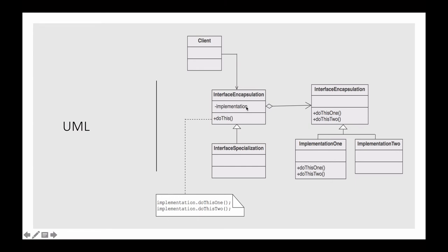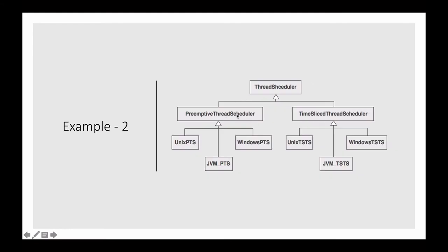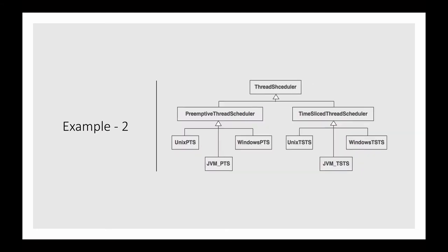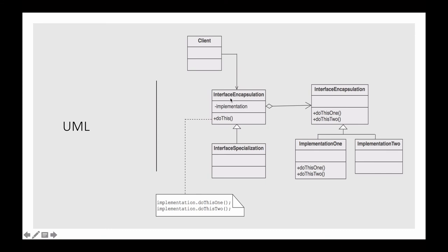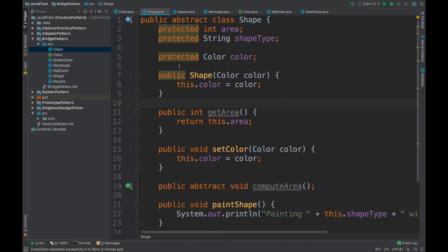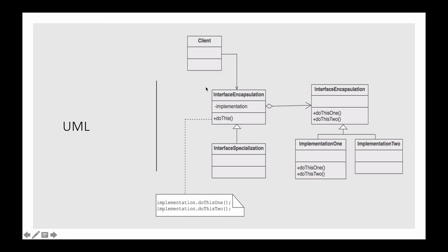This is a very nice design pattern because it gives you so much flexibility compared to plain inheritance. We will now quickly go and code this shape example in Java and see how it saves us from creating a huge number of classes. I've created a small example to demonstrate the usage of the bridge pattern in Java, so let's look at the code and map it to the UML diagram we saw.